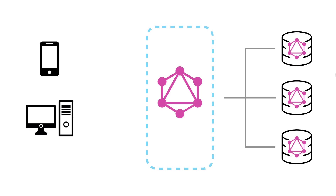GraphQL is best defined as a query language for APIs, meaning that you have complete control over the data that's being returned by a GraphQL API, just by defining the fields that you'd like to be returned in a GraphQL operation. These operations could be a query, a mutation, or a subscription.